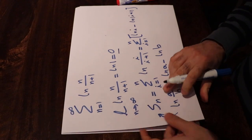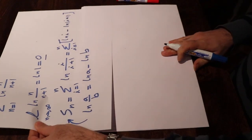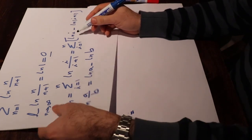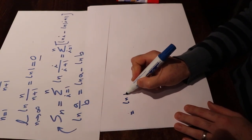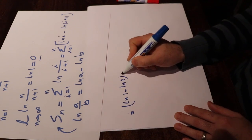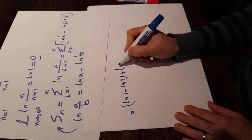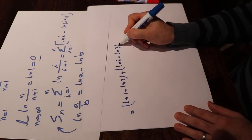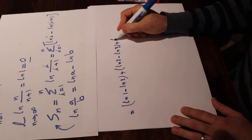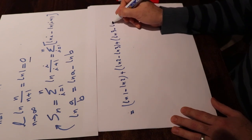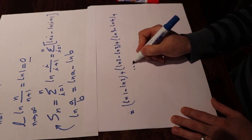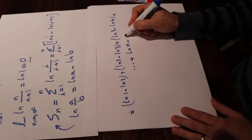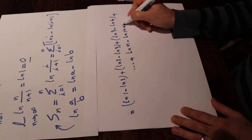So now if you expand this series, if i is equal to 1, that will be ln 1 minus ln 2. And when i is equal to 2, that will be ln 2 minus ln 3. Or when i is equal to 3, that will be ln 3 minus ln 4. And that can continue until i is equal to n and that will be ln n minus ln n plus 1.